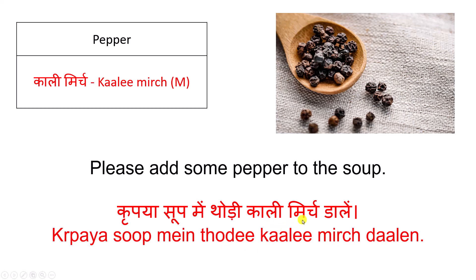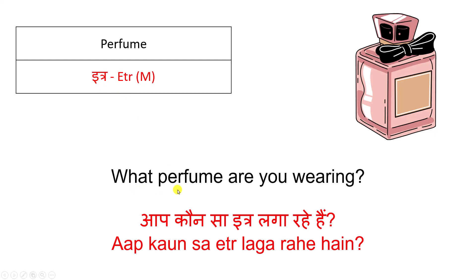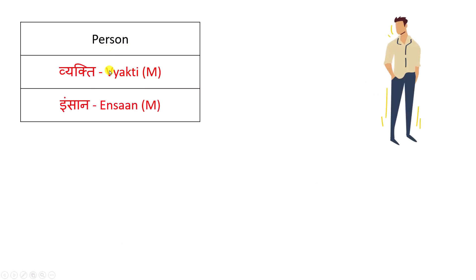काली मिर्च — Pepper. Perfume — इत्र। आप कौन सा इत्र लगा रहे हैं? इत्र — Perfume. Person — व्यक्ति — इंसान।